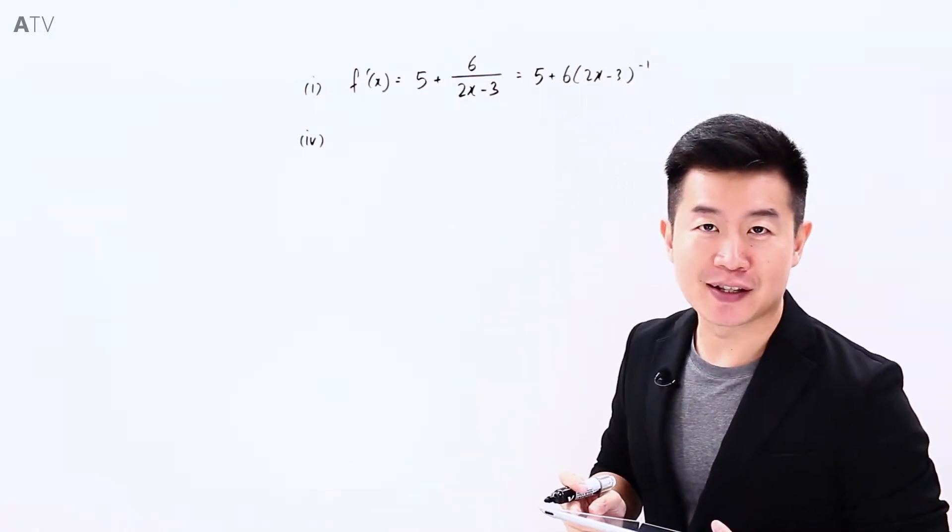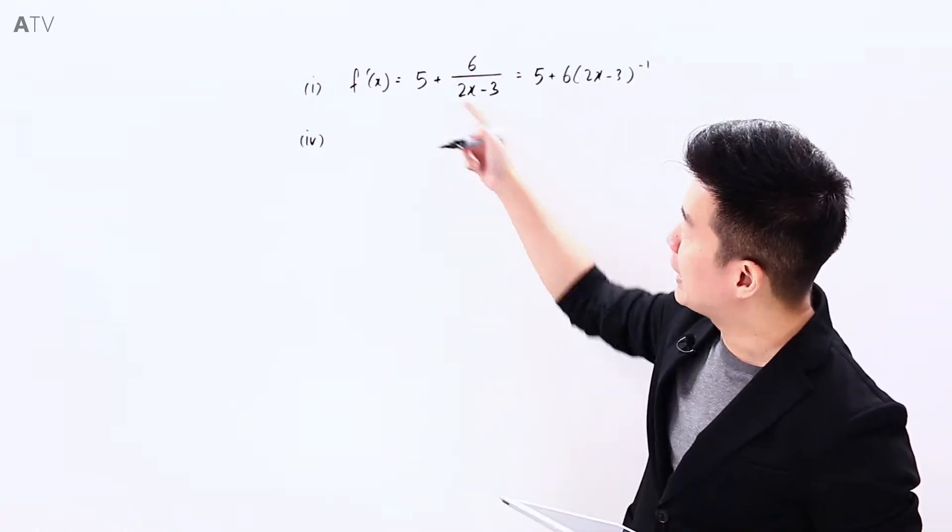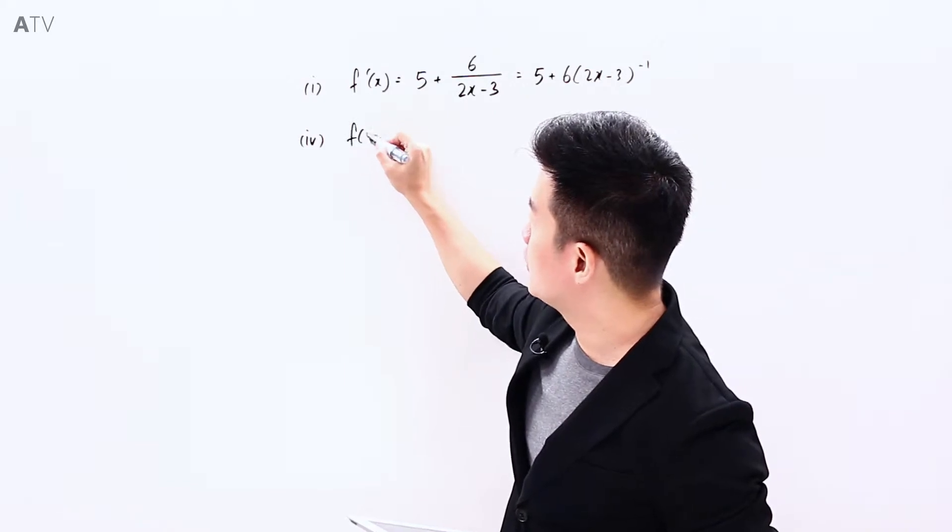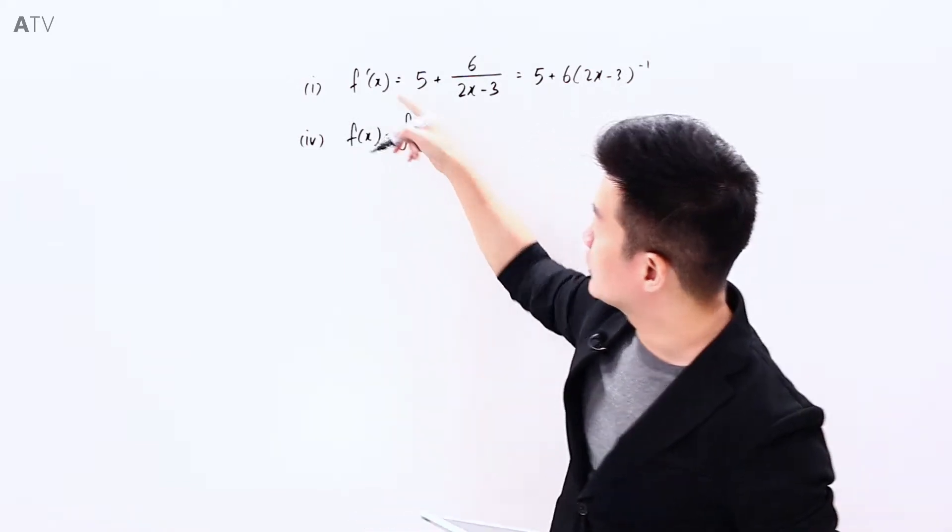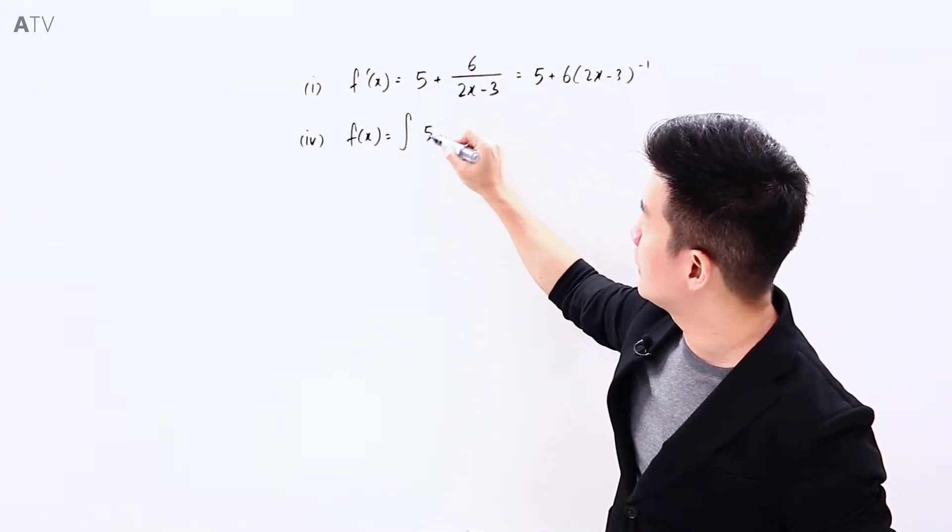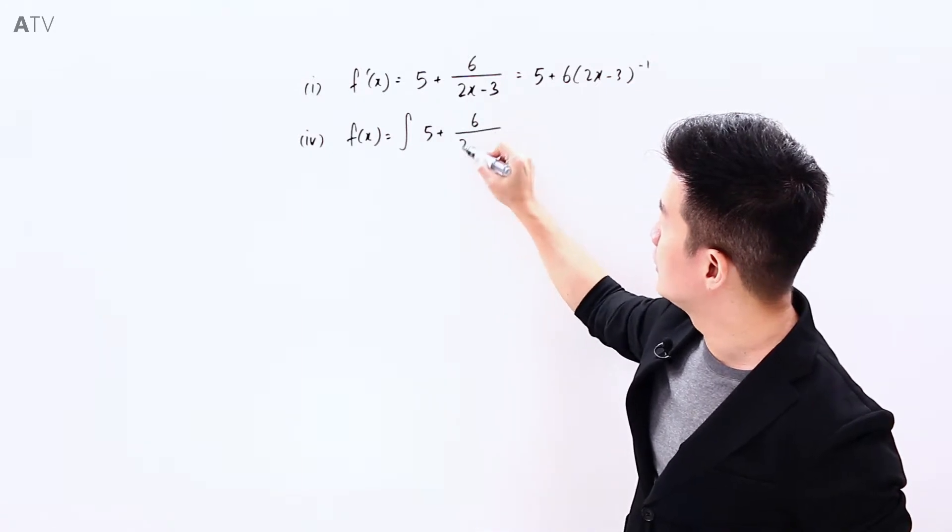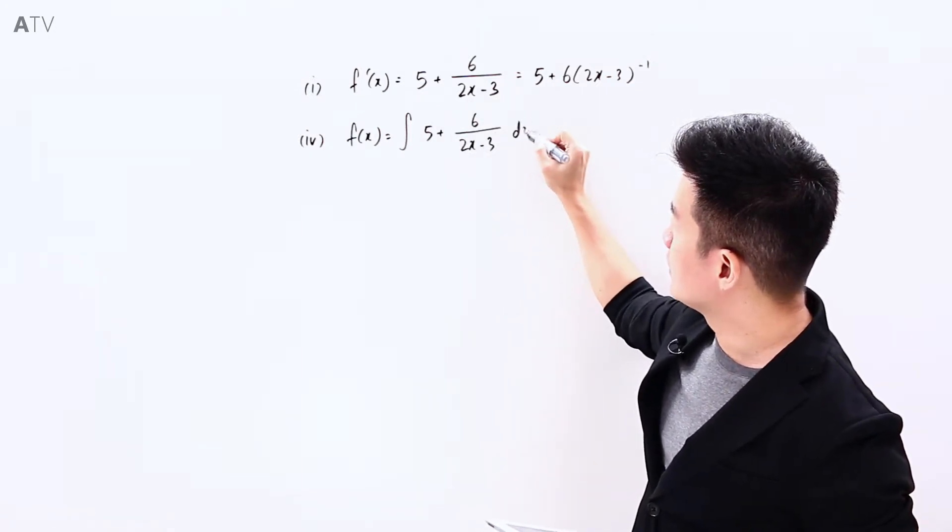To find an expression for fx, let's apply integration to f'x. So fx is going to be the integration of f'x which is 5 plus 6 over 2x minus 3.